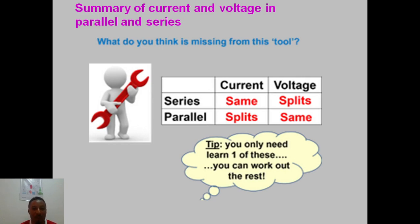Summary of current and voltage in parallel and series circuits: In a series circuit, the same current flows throughout but the voltage is shared. In a parallel circuit, the current splits into two or more parts, but the voltage is the same across each branch.